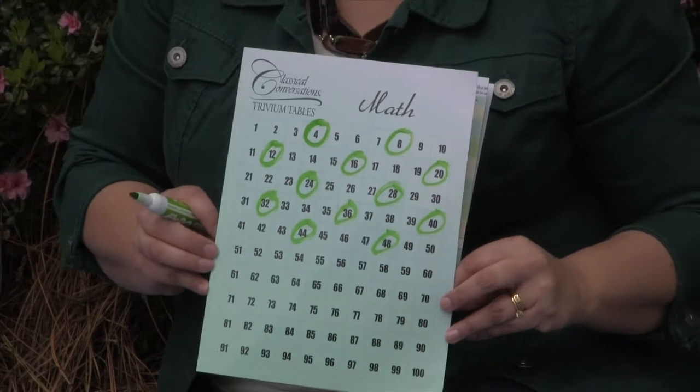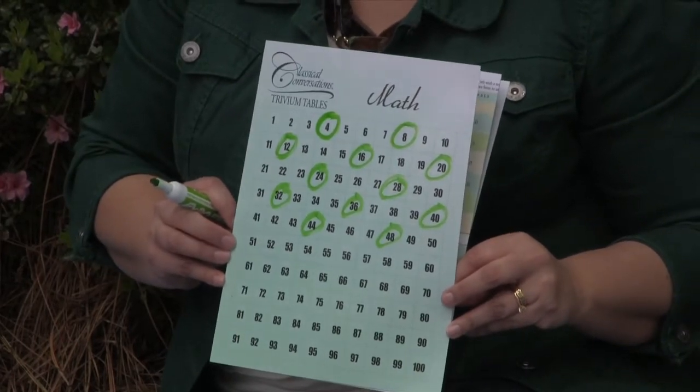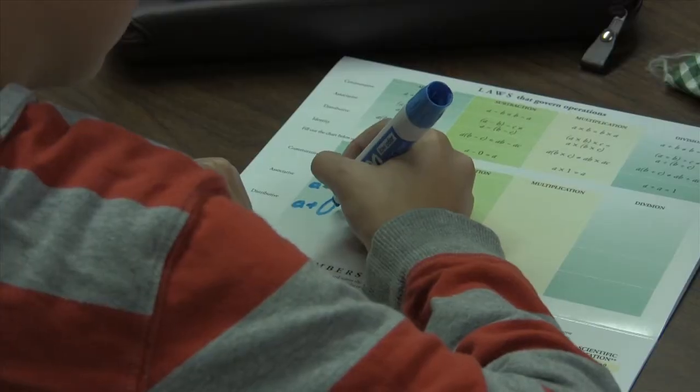You can also use this chart to identify the odd numbers or the prime numbers. Refer to it when you're teaching a math lesson, and it will help your student begin to visualize numbers and get to know how they relate to one another.